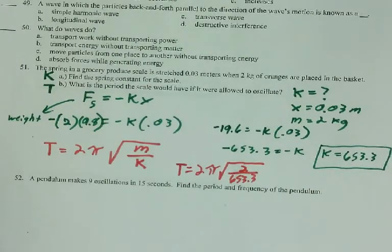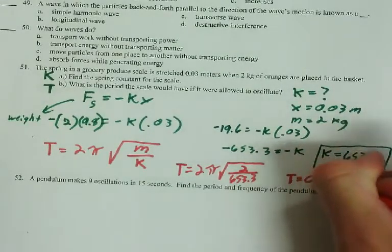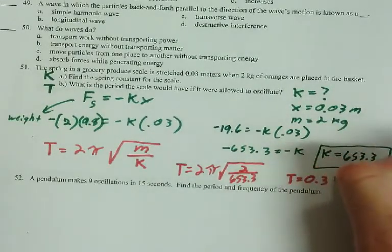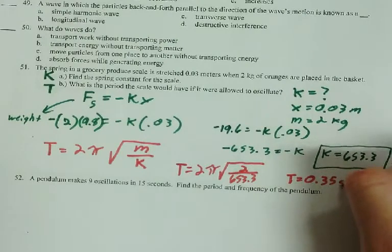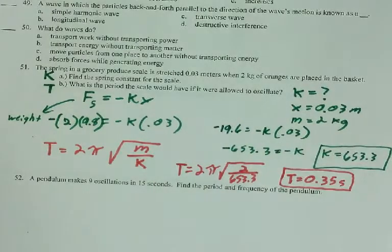Divide 2 by 653.3. Square root that answer. Multiply by 2. Multiply by pi. And you get the period to be 0.35 seconds. There you go.